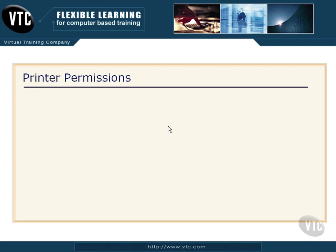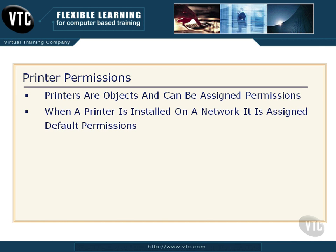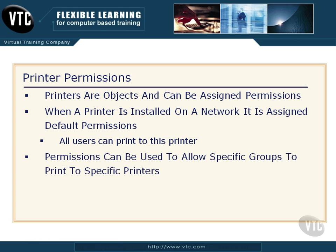Now let's talk a little bit about printer permissions. Printers are objects on our network, and as objects they can be assigned permissions. We're talking about the logical printer here. When a printer gets installed on the network, it receives default permissions automatically, and those default permissions are that any user in the everyone group can use that printer, or can print to that particular printer.